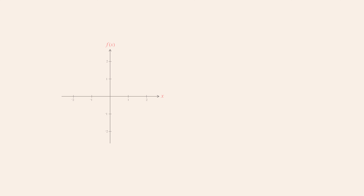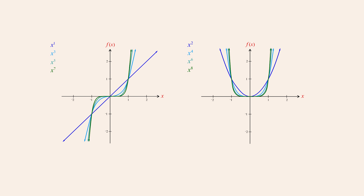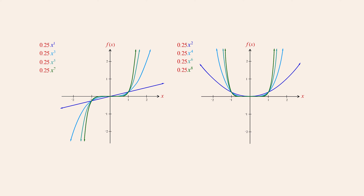As we saw in the previous lecture, the graphs of powers of x are relatively simple. We also saw how a monomial's coefficient affects the shape of its graph by vertically stretching it or compressing it, or in the case of negative coefficients, reflecting it across the x-axis.